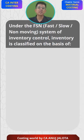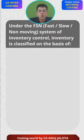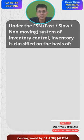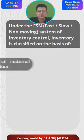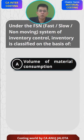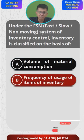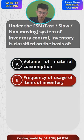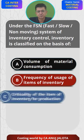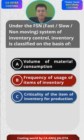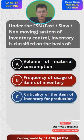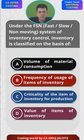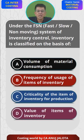The MCQ for today is under the FSN method. FSN is Fast, Slow, or Non-moving of inventory control. Inventory is classified on the basis of four options: A) volume of material consumed, B) frequency of usage of items of inventory, C) criticality of the item of inventory for production, and D) value of the items of inventory.